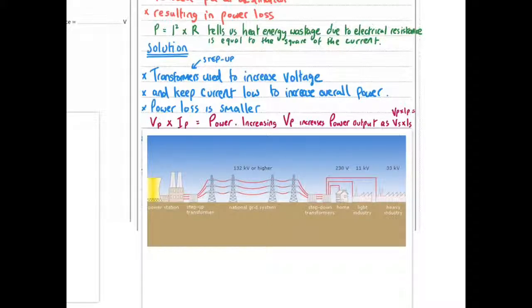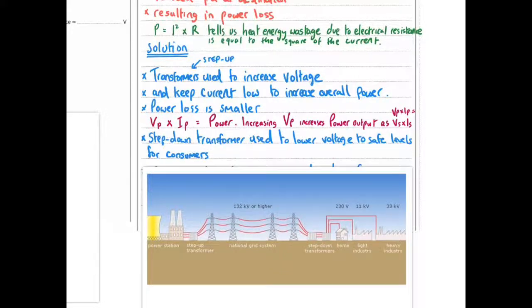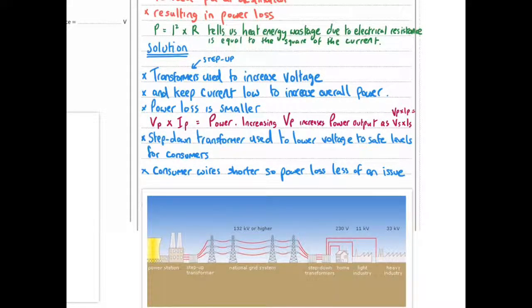Step-down transformers are used to lower voltage to safe levels. So step-down transformers occur here before we get to our home. Step-up transformers boost voltage before the national grid, step-down transformers afterwards for consumers. And consumer wires are shorter so power loss is less of an issue.